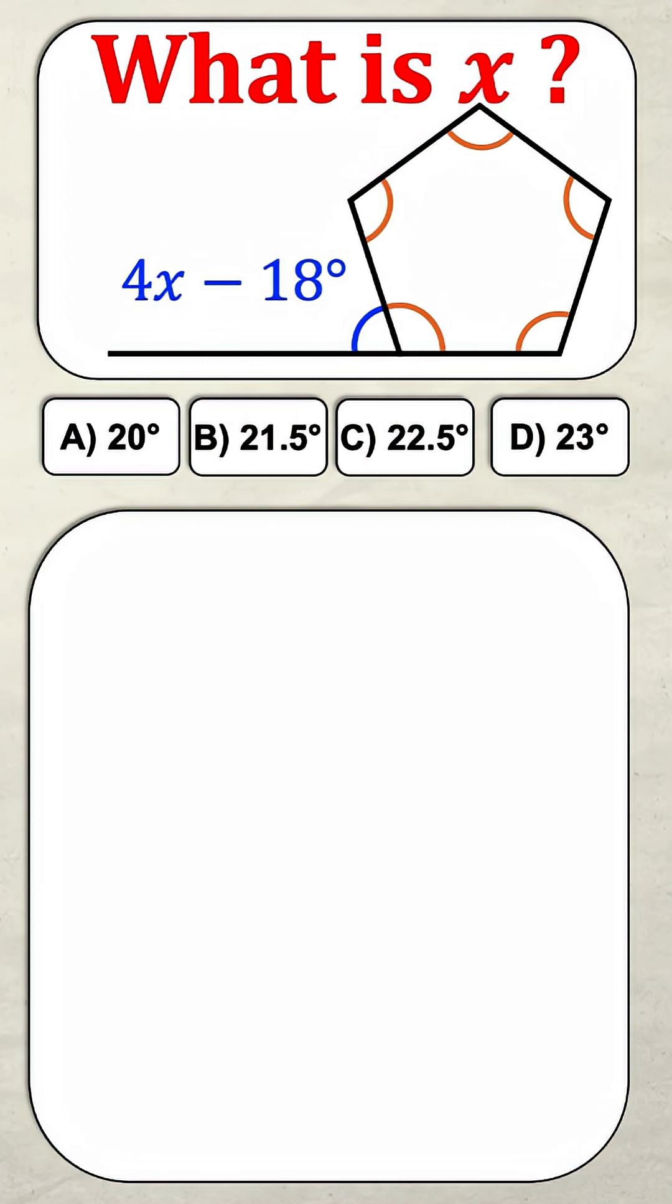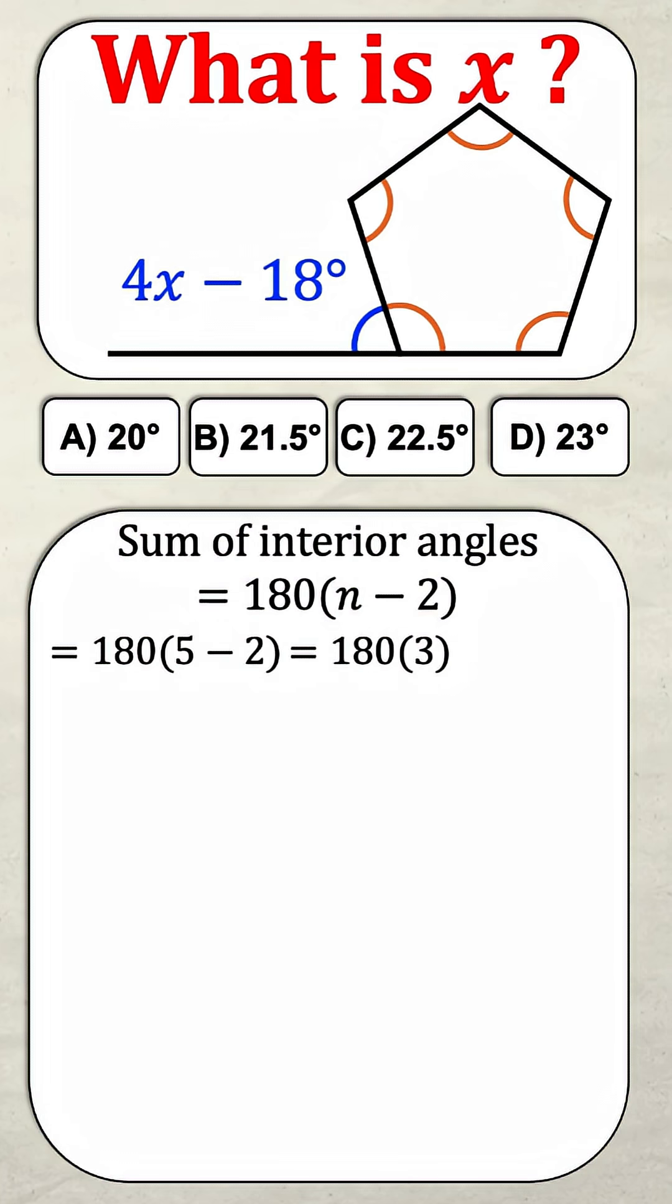The formula for this is that the sum of the interior angles equals 180 times the number of sides minus two. The number of sides in the pentagon is five, so this simplifies to 180 times five minus two, which is 180 times three, which is 540 degrees.